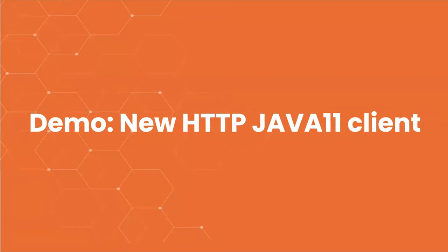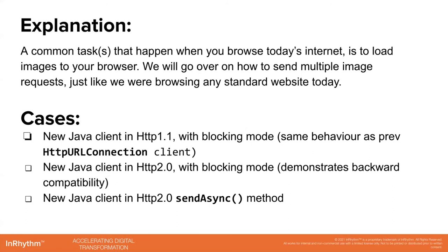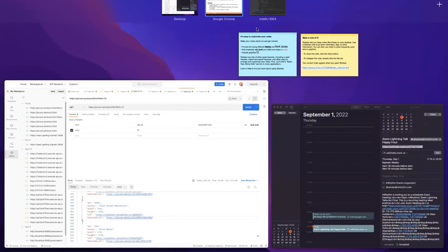So let me demo the HTTP Java 11 client and set the stage for what the demo is going to be. The demo is going to simulate a common task you'd do on today's internet — when you browse the web, you load images and interactive content in your browser. We will go over a couple of use cases: how to send multiple image requests, just like you were browsing a website today. I'll go over the HTTP 1.1 case, the HTTP 2 case, and so on.